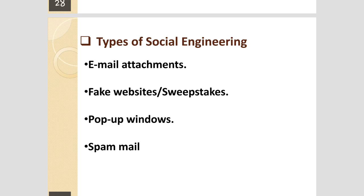Let's discuss email attachment. In this type of computer-based social engineering, emails accompanied by attachments are sent to victims to gain confidential information or install malware on the victim's computer. When the victim opens the email, he or she is redirected to a fake website where the victim is prompted to enter confidential information. The emails also contain attachments which when opened can install malware such as viruses and Trojan horses into the victim's computer.